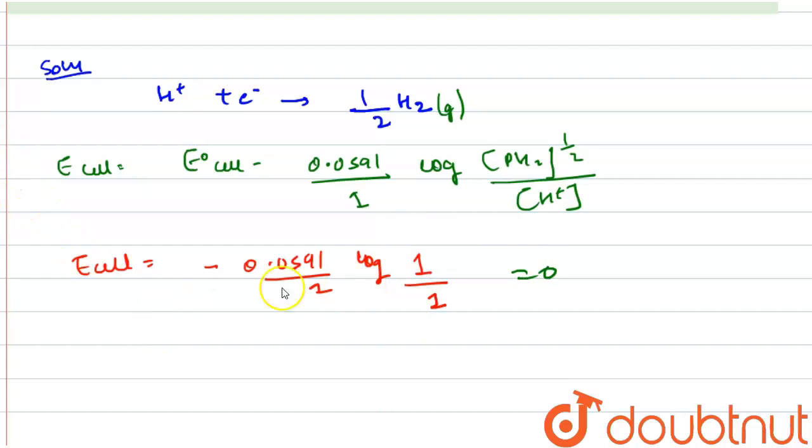Now E of cell 2, where the pressure increases - let's call it E of cell 1 and E of cell 2 - is equal to minus 0.0591 upon one into log of 100 to the power one-half upon concentration of H+ which is one.